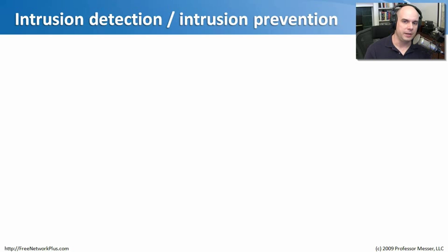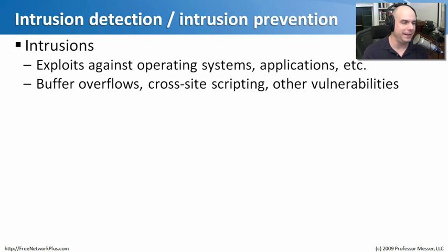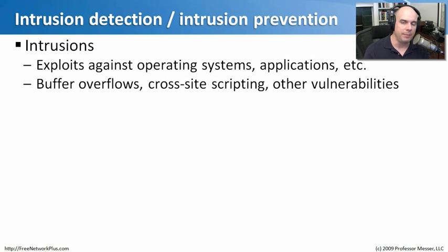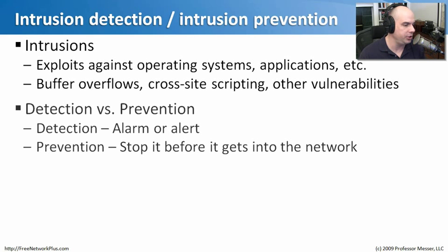Another type of scanner on our network is something with more of a security focus — the intrusion detection system. There are also intrusion prevention systems, which are very similar with a couple of big differences. We're focusing on intrusions — the ways that bad actors take control of our machines by exploiting vulnerabilities in our operating systems and applications. These applications are susceptible to things like buffer overflows, cross-site scripting, and database injections. There's a big difference between intrusion detection and intrusion prevention.